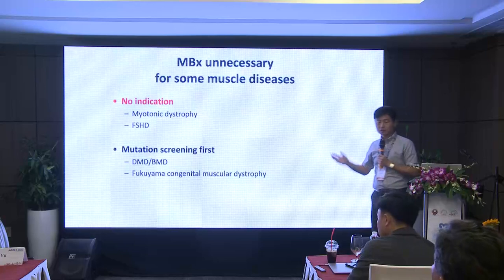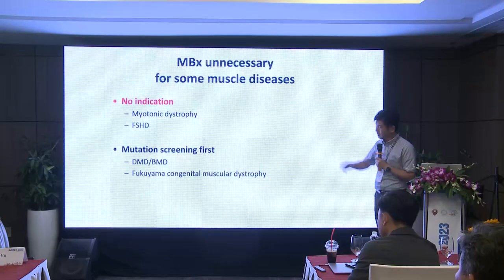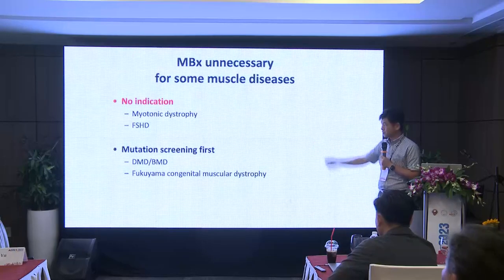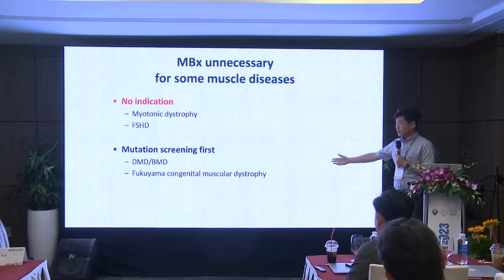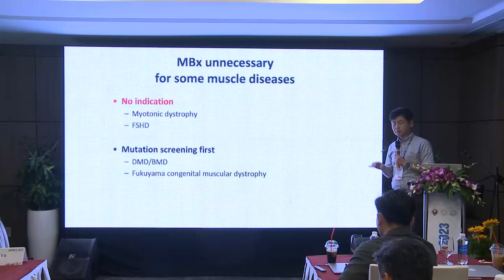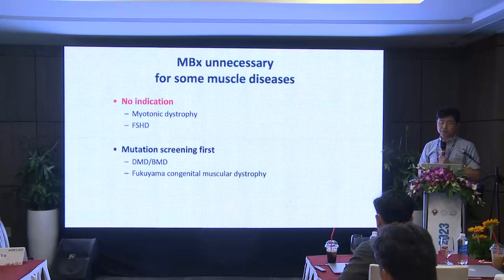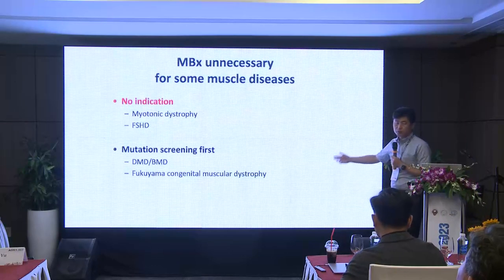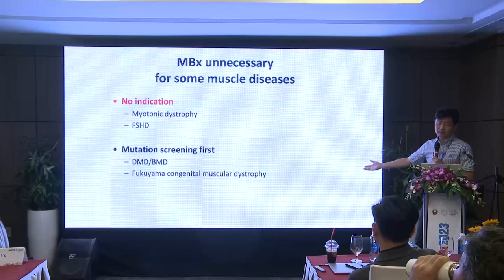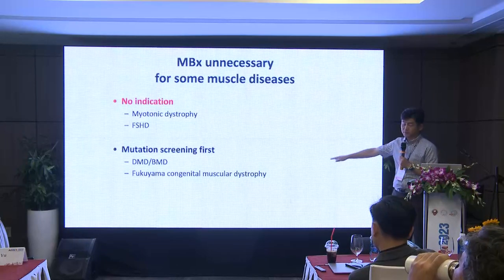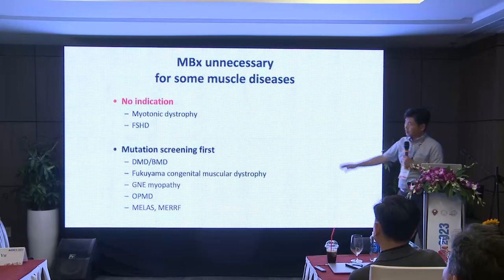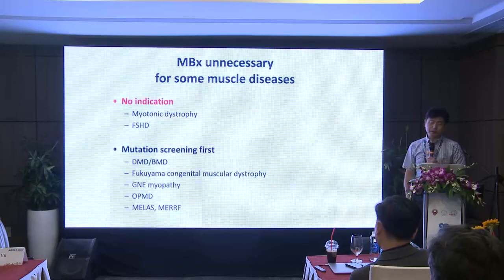Mutation screening is available for a number of disorders. The first one to become available was Duchenne and Becker muscular dystrophy. MLPA, which can detect exonic deletions or duplications, is available almost everywhere in the world. In Japan, around 50% of congenital muscular dystrophy patients have Fukuyama congenital muscular dystrophy, caused by a specific mutation in the Fukutin gene — we can just check that particular mutation by PCR. So we never do a biopsy for those cases nowadays.